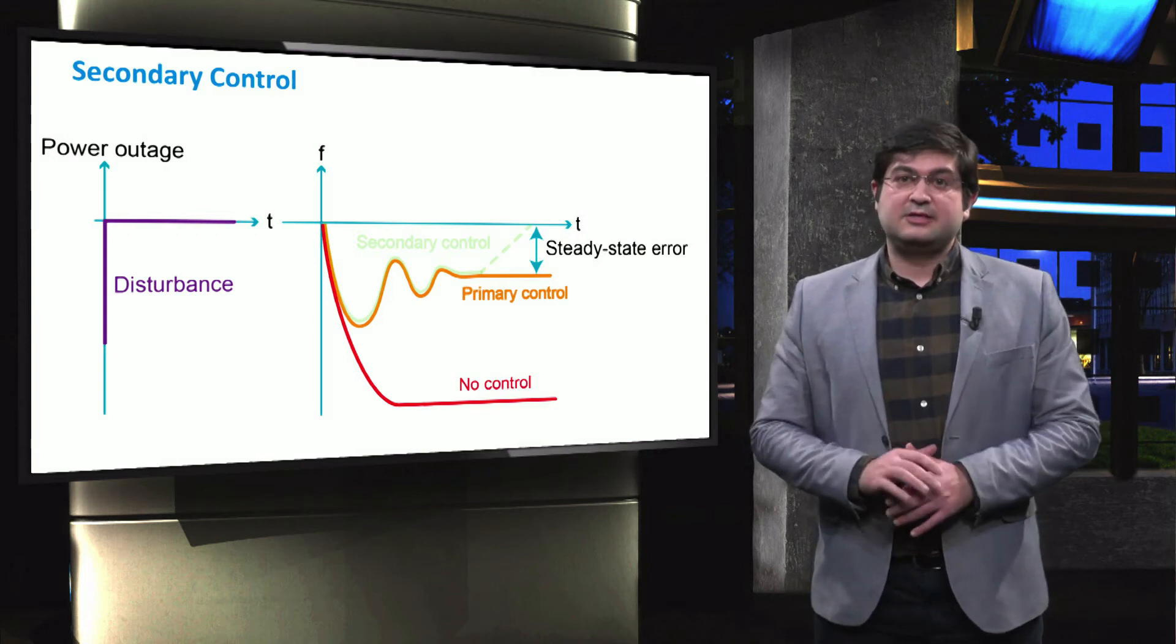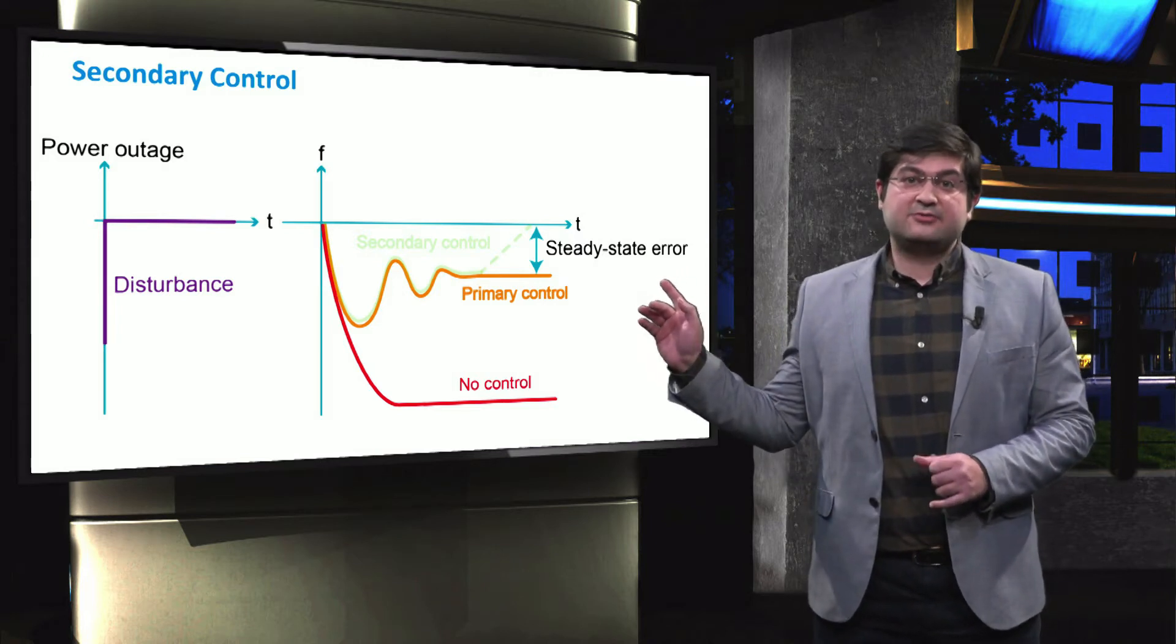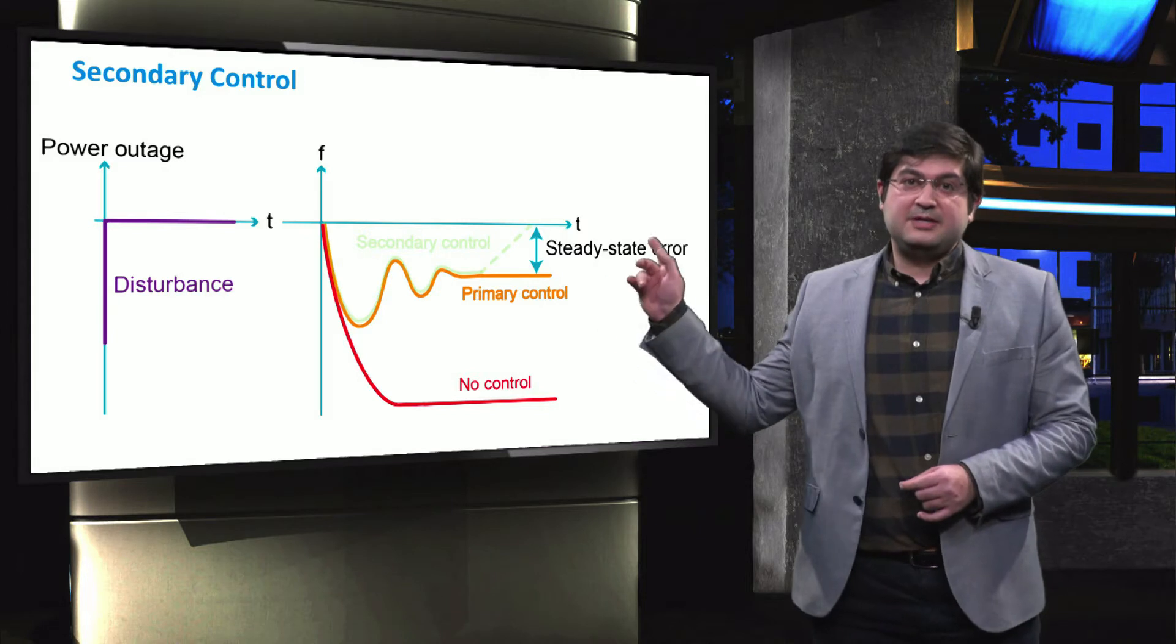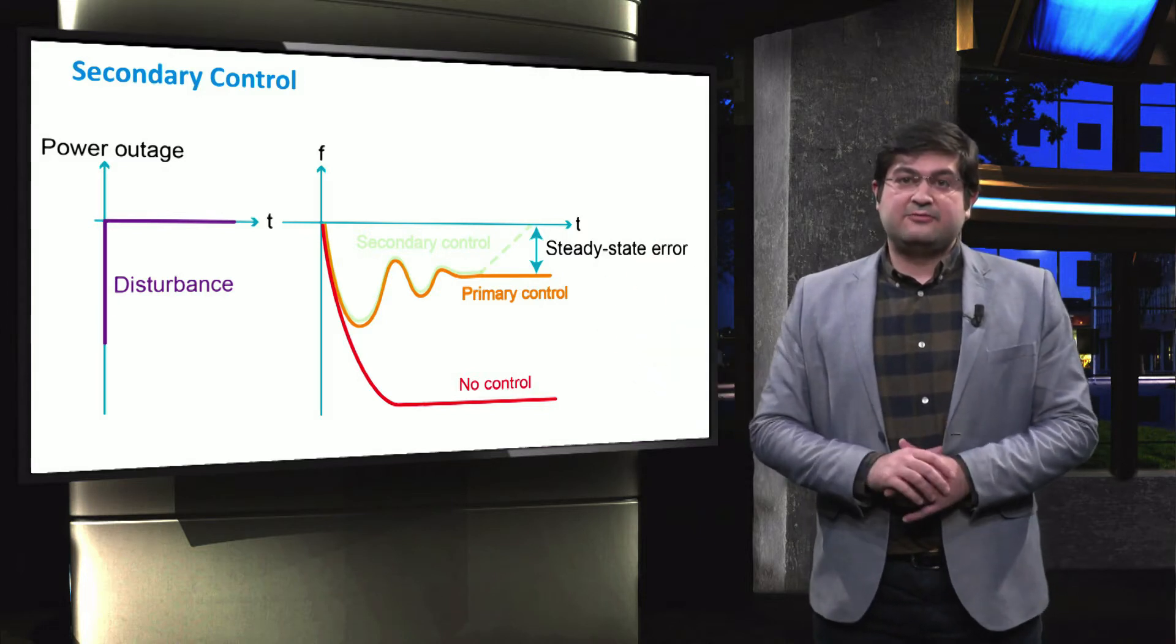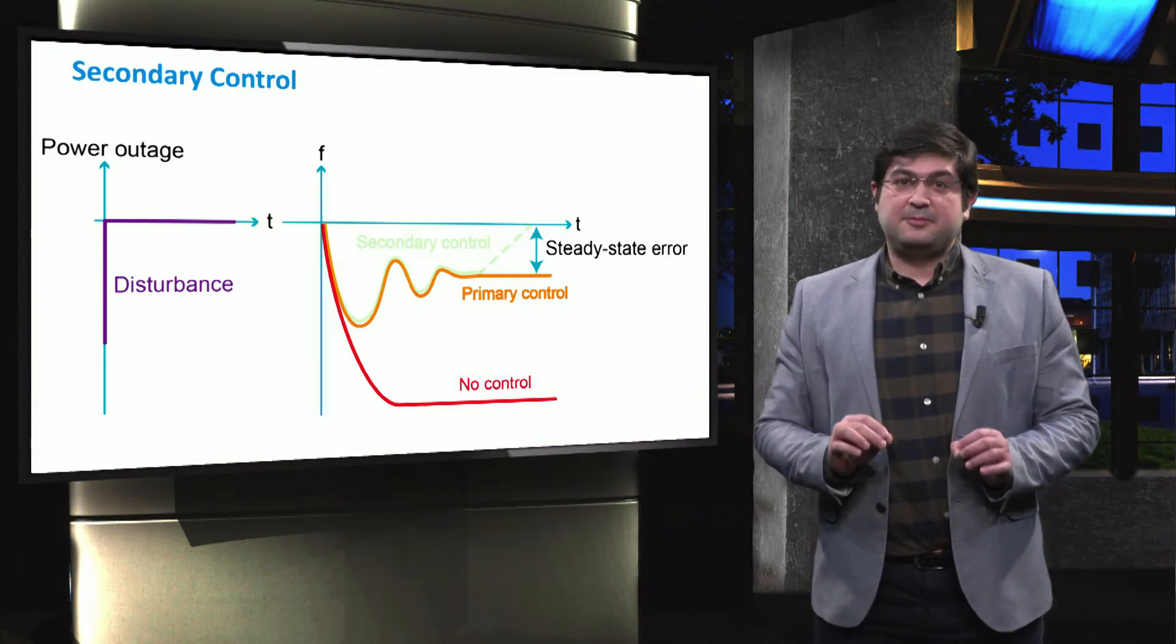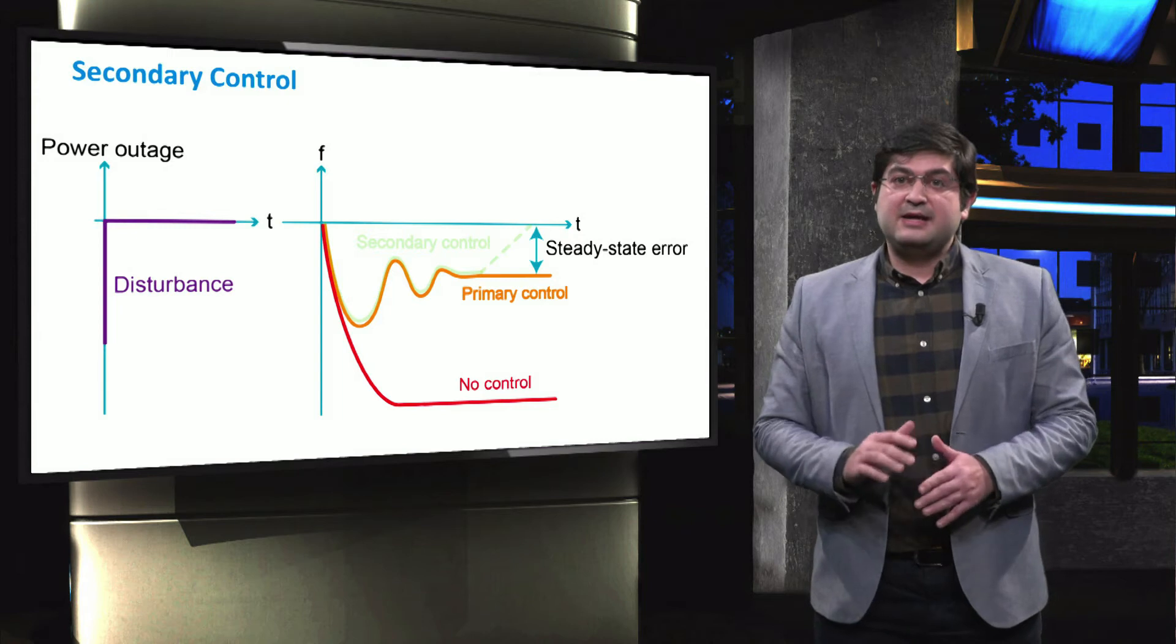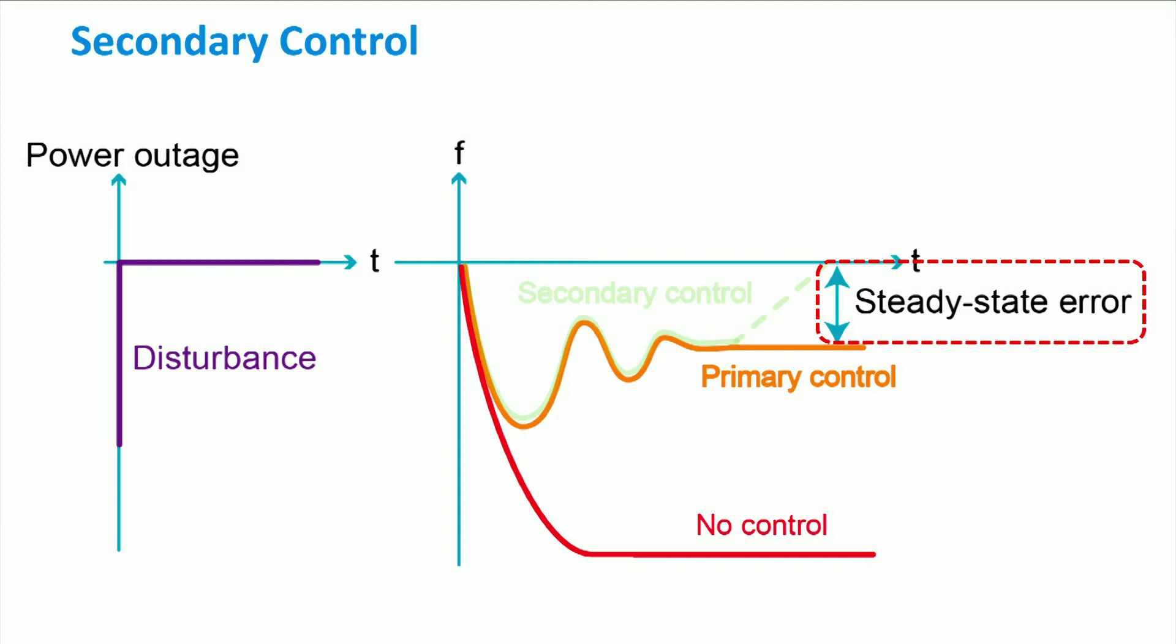If the primary frequency control is implemented, then the large frequency deviations right after the disturbance can be effectively suppressed. However, as it can be seen, the frequency does not go back to the rated value using the primary frequency control, and remains at a steady state value below the nominal one. As the system shall operate always at the nominal frequency, this steady state error shall be eliminated.